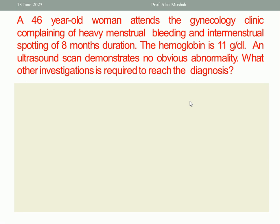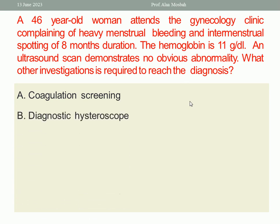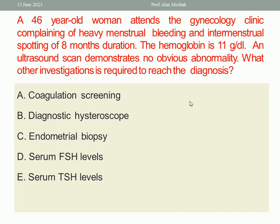Next: a 46-year-old woman attends the gynecologic clinic complaining of heavy menstrual bleeding and intermenstrual spotting of 8-month duration. The hemoglobin is 11 g/dL. An ultrasound scan demonstrates no obvious abnormality. What other investigation is required to reach the diagnosis? A. Coagulation screening. B. Diagnostic hysteroscope. C. Endometrial biopsy. D. Serum FSH level. E. Serum TSH level. The one best response is C, Endometrial biopsy, to reach the diagnosis in such a case — she is above 40 and complaining of irregular bleeding.